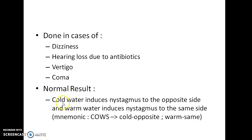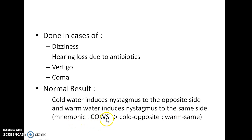The normal result is that cold water induces nystagmus to the opposite side and warm water induces nystagmus to the same side. For example, if you inject cold water to the left ear, the fast component of nystagmus will be to the right side. And if you inject warm water to the left ear, the fast component of nystagmus will be towards the left side. A simple mnemonic to remember this is COWS — Cold Opposite, Warm Same.